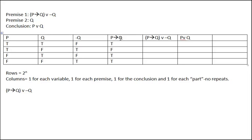That may seem odd, but it makes sense if you think of it as a promise. If someone promises that if they get a B on the final they'll get a B in the class, the only thing that shows the person lied is if they get a B on the final and don't get a B in the class. If they don't get a B on the final but somehow get a B in the class, they haven't been lied to. If they don't get a B on the final and don't get a B in the class, they haven't been lied to either.